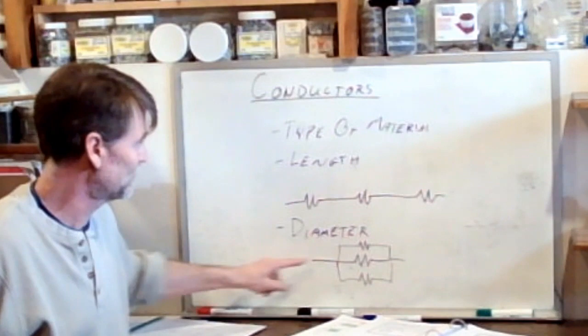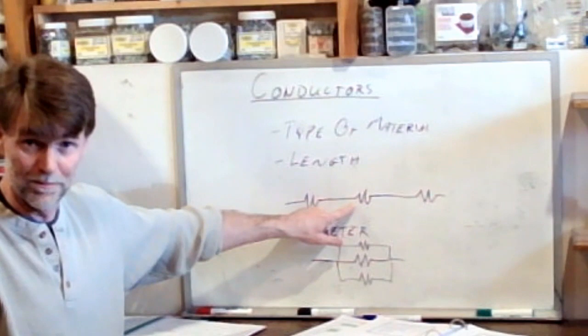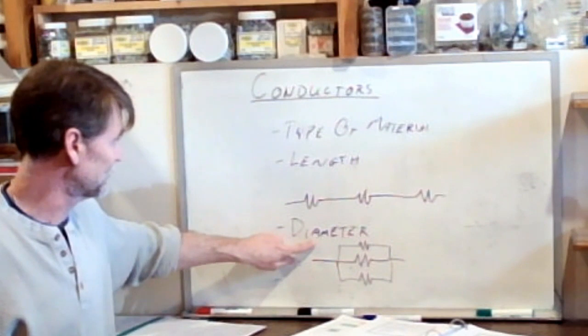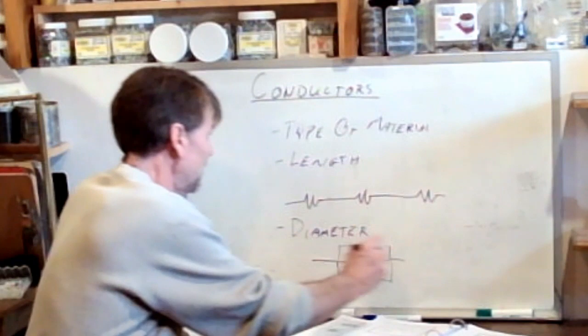Okay? So a longer conductor means that conductor offers more resistance. A larger conductor, a fatter conductor with a greater diameter, offers less resistance. Okay? And finally, the last point, I need myself room down there. Sorry. The last point is temperature.